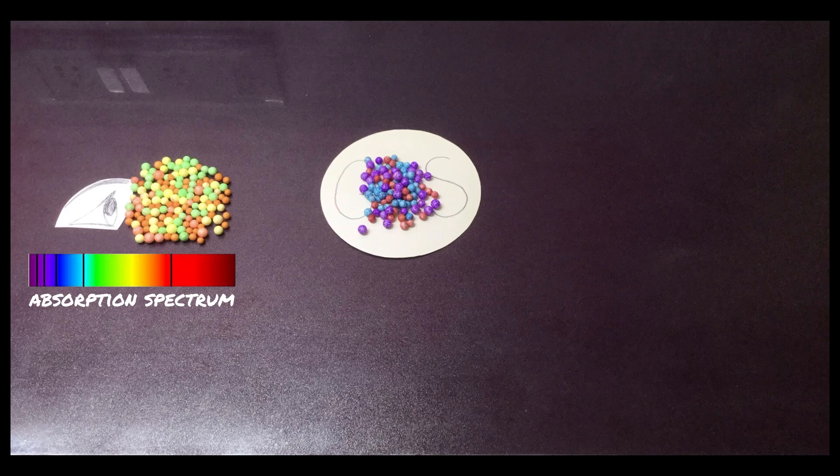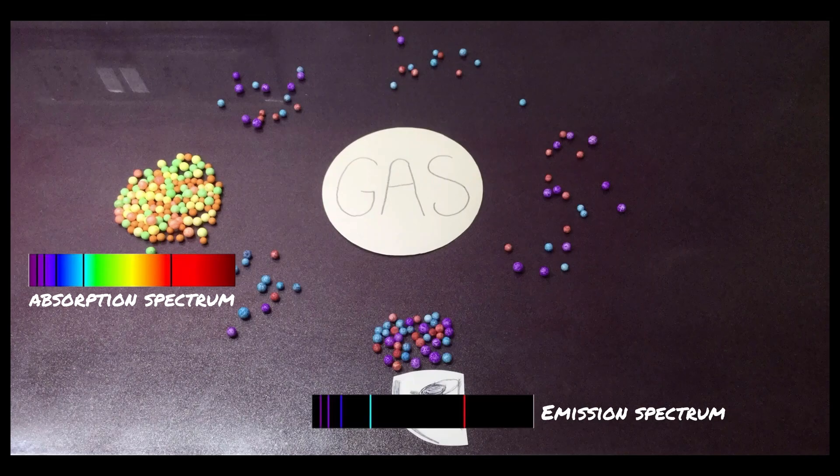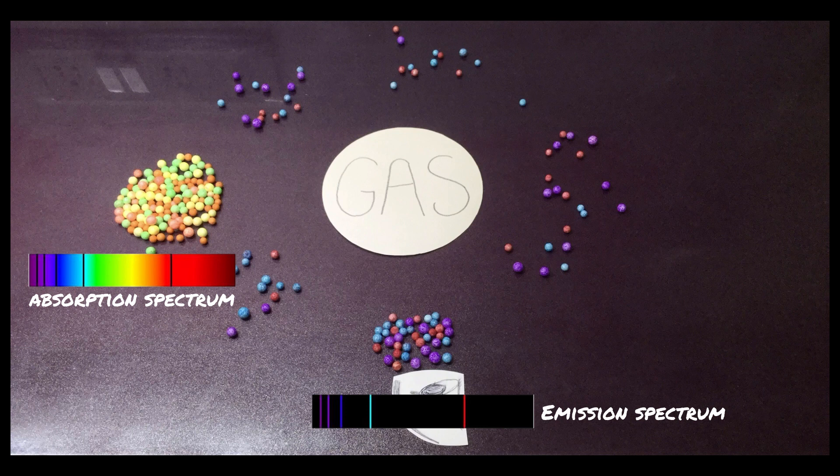The colours that had been absorbed are then re-emitted in random directions, so when we look from the side, we see bright lines, called an emission spectrum.